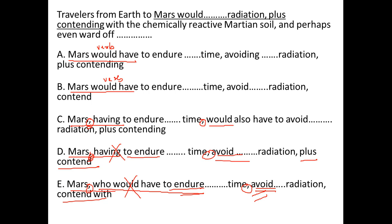If you look at the last word, it says 'plus contending' — we have 'plus,' which is the same as 'and,' so there could be a list. We need to check if there is a list. After the underlined portion there is an 'and,' and after that 'eliminate' — that is the base form of a verb. That means other elements in the list must also be in the base form.